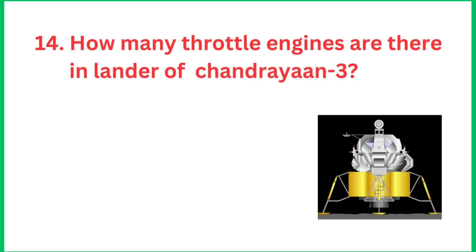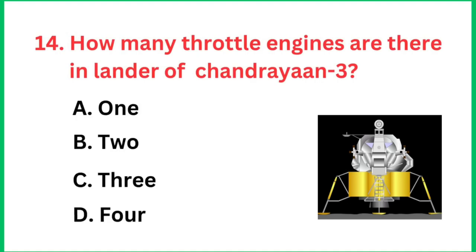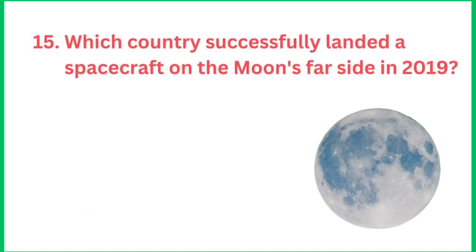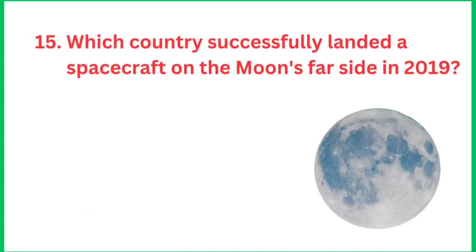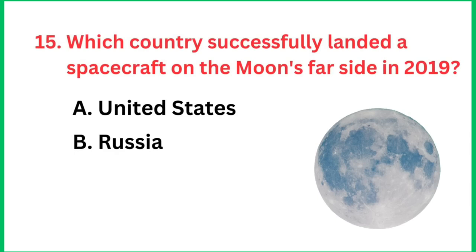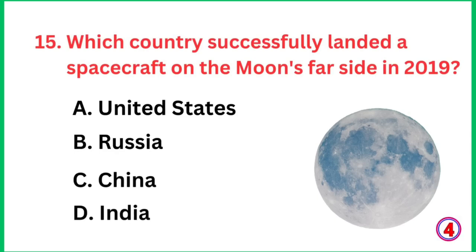How many throttle engines are there in the lander of Chandrayaan 3? The total engines are 4. In Chandrayaan 2 there were 5, with one engine at the center — that was the problem. Next: Which country successfully landed a spacecraft on the moon's far side in 2019? The correct answer is China.